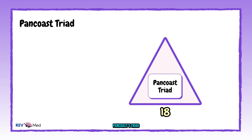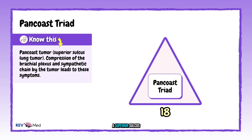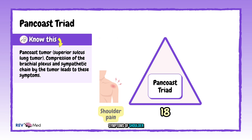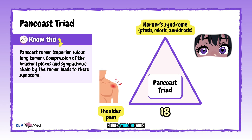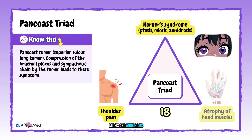Number eighteen: Pancoast triad — a superior sulcus lung tumor. Compression of the brachial plexus and sympathetic chain leads to shoulder pain, Horner syndrome (which includes ptosis, miosis, and anhidrosis), and atrophy of the hand muscles.